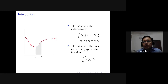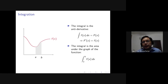The first idea is that the integral is the opposite operation of taking the derivative — it's the anti-derivative. So if the integral of small f is big F, then the derivative of big F should give small f back; it is the inverse operation of taking the derivative. The second idea is that the integral is the area under the graph of the function, so the area under the graph from a to b is the definite integral.